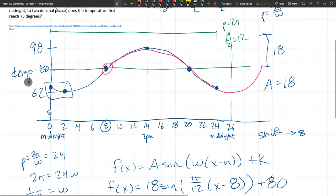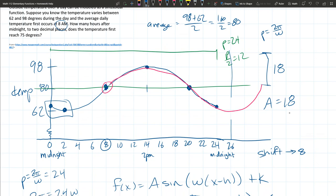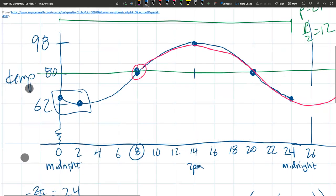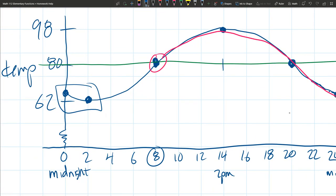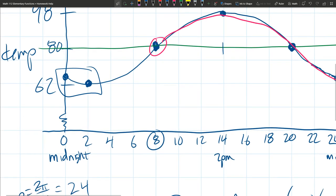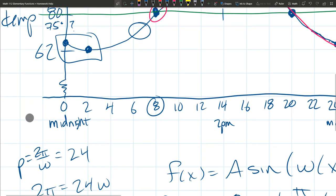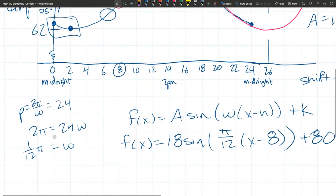And now we can come back and say, how many hours after midnight to two decimal places does the temperature first reach 75 degrees? I'm going to guess and say it's probably not going to happen in this box right here. 75 is very close to 80. Just looking at the graph, it would be like somewhere in that area. So what we're going to do, that's a y value. I want to know what about 75 degrees?